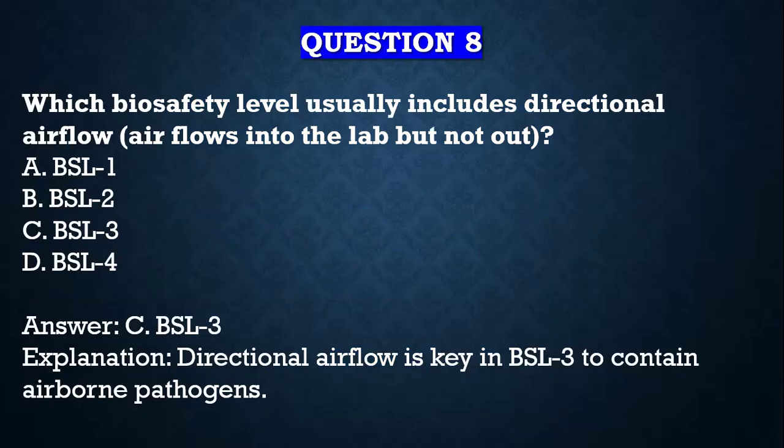Question number eight: which biosafety level usually includes directional airflow — that is, airflow into the lab but not out of the lab? A) BSL1, B) BSL2, C) BSL3, D) BSL4. Your answer is BSL3, because in BSL3 directional airflow is key so as to contain pathogens — air flows into the lab but not out, so pathogens don't escape.